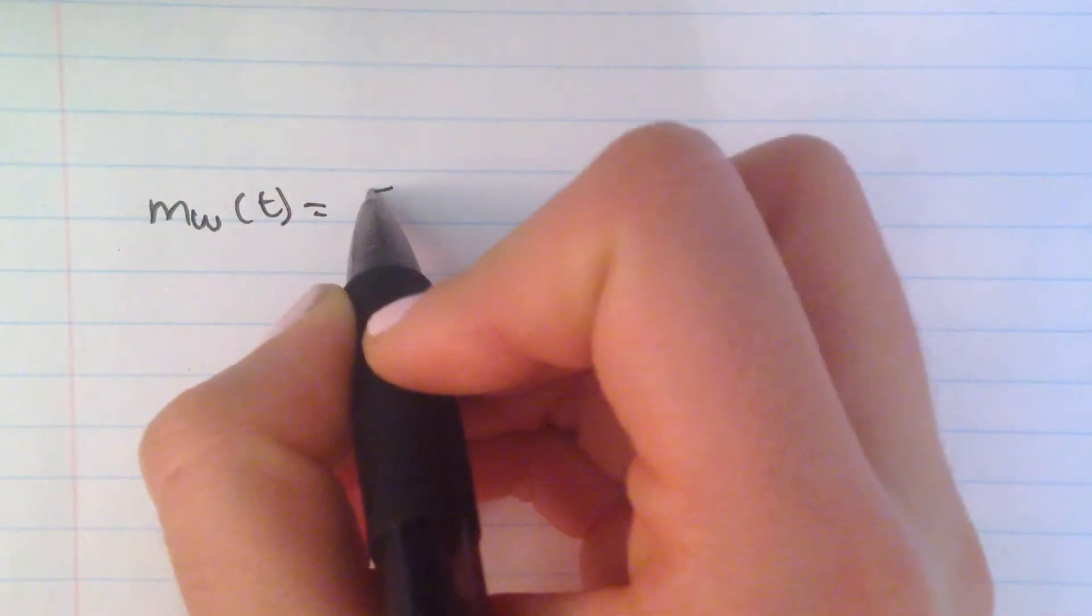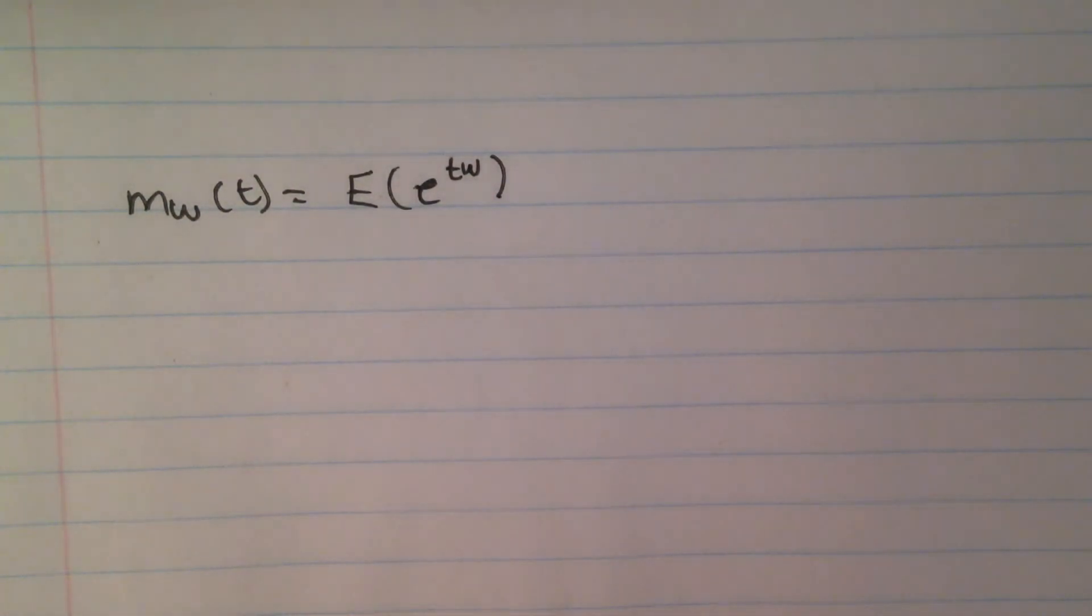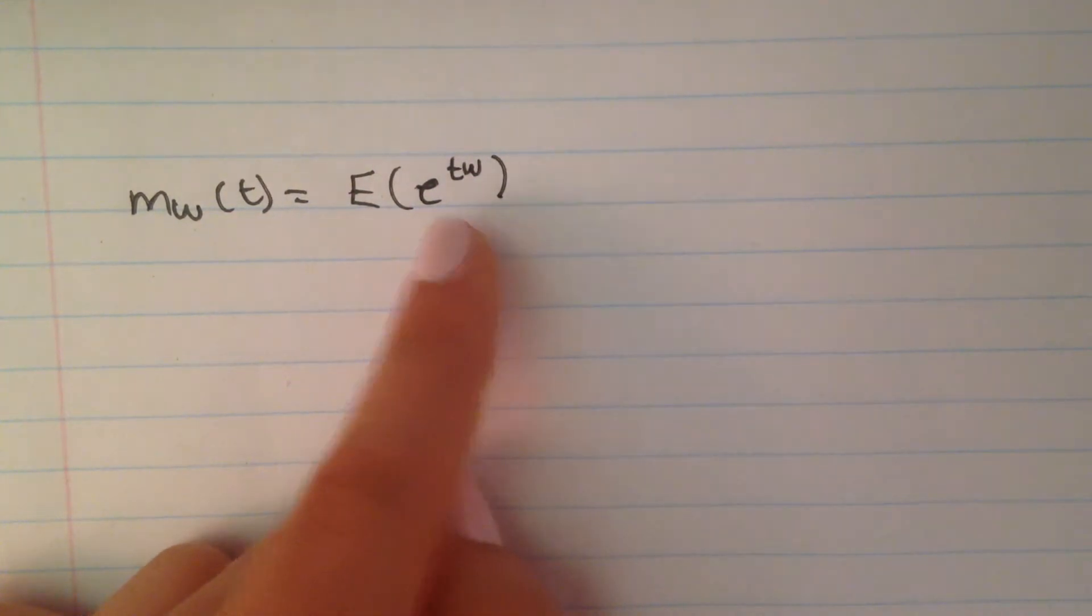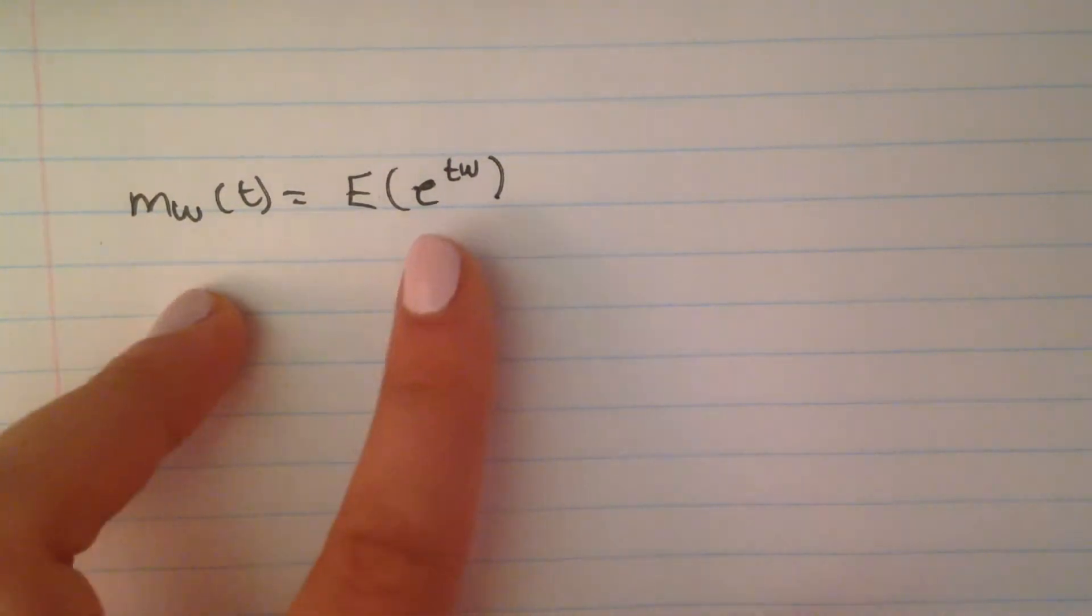So moment generating functions, you're just calculating the expected value. Expected value, how do we calculate that? It's usually just whatever is in the bracket. So in this case, it's going to be MW, function of t equals the expected value of e to the power of tw. That's your moment generating function. This is the way you do moment generating functions. When you're calculating the expected value, you multiply with everything you see in the bracket.